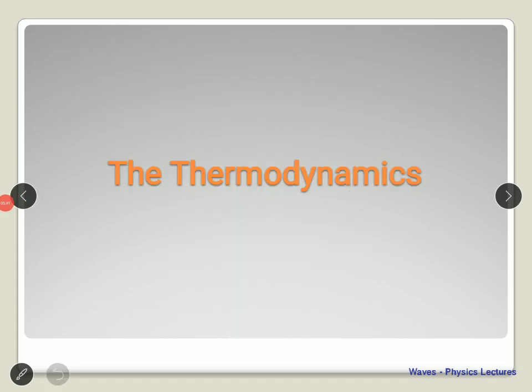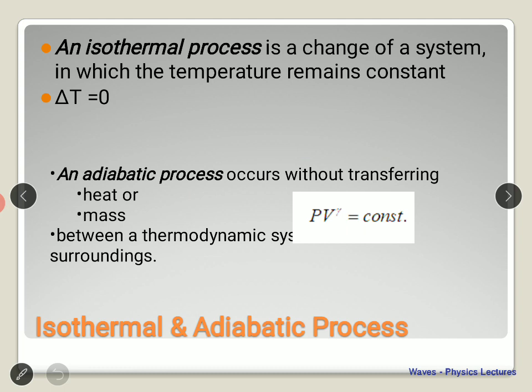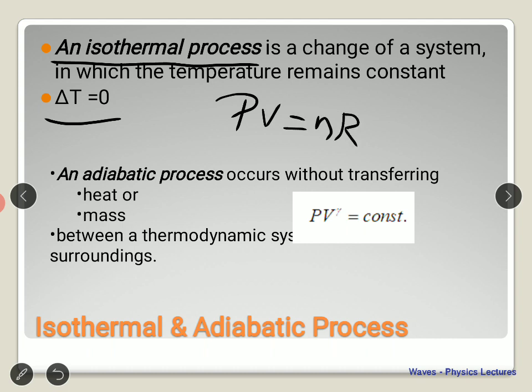Let's revise some thermodynamics. The first term is the isothermal process — in an isothermal process there is no change of temperature. If a system undergoes a thermodynamic process with no temperature change, we call it isothermal. You should remember the equation PV = nRT, from which we get three quantities: pressure, volume, and temperature. We also have other thermodynamic quantities like enthalpy and entropy.